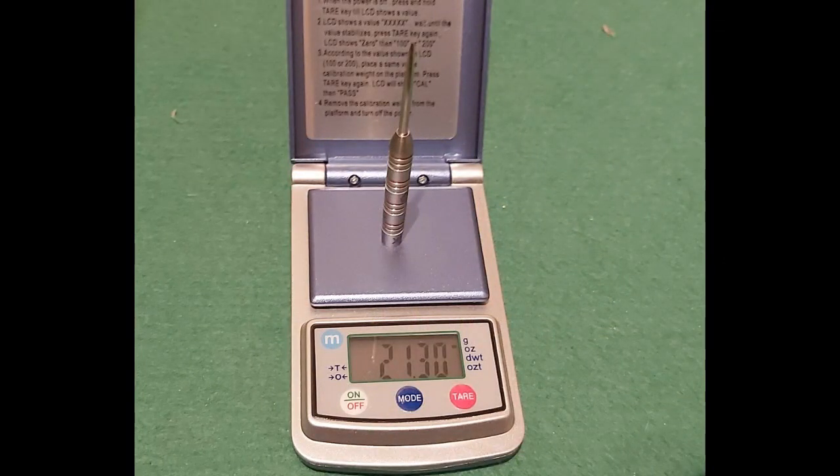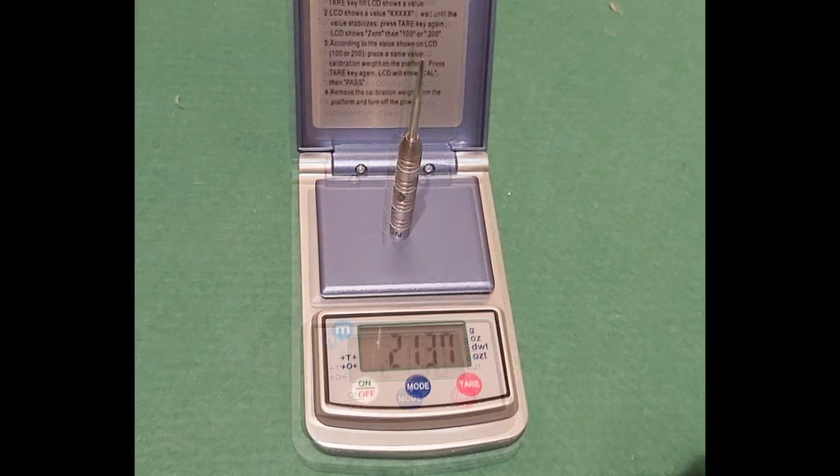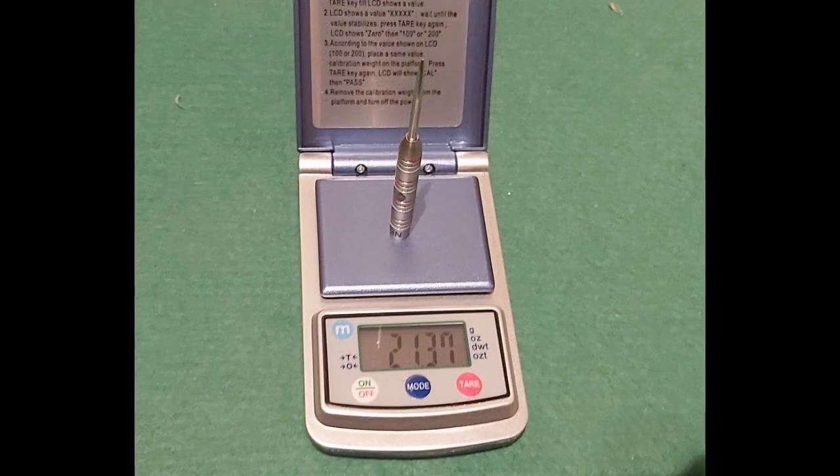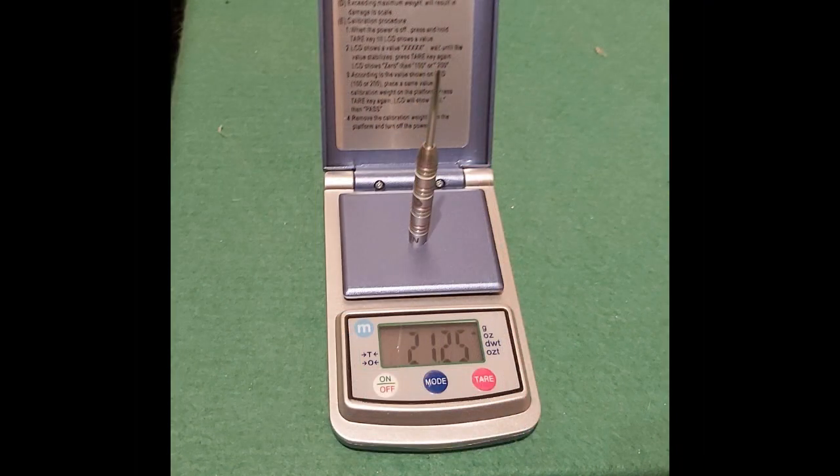These are a 90% tungsten dart and when they weighed they came in at 21.3, 21.37 and 21.25. So not much variance but 0.12 of a gram.